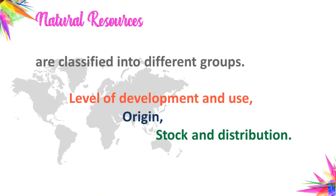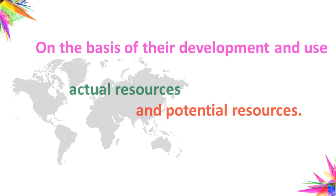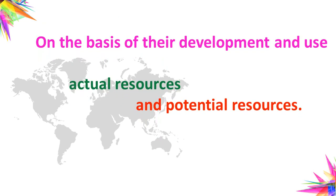Natural resources are classified into different groups. There are three different bases: first, the level of development and use; second, on the basis of origin; and third, on the basis of stock and distribution. On the basis of development and use, resources are classified into actual and potential resources.